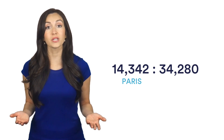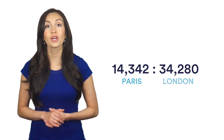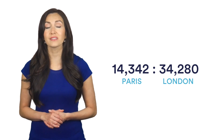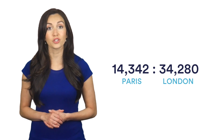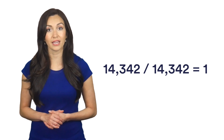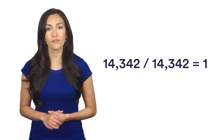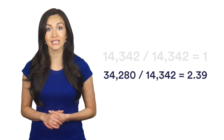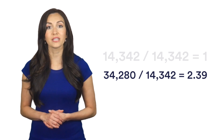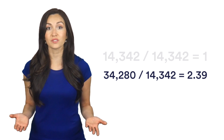So, we write 14,342 to 34,280. Next, we divide both sides of the ratio by the smallest number. Here, that's 14,342. 14,342 divided by 14,342 equals 1. 34,280 divided by 14,342 equals 2.39, which leaves us with 1 to 2.39, a simplified ratio.